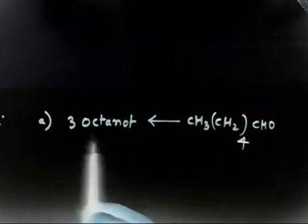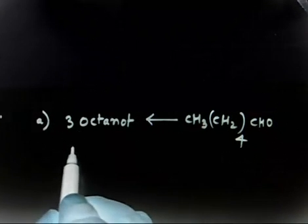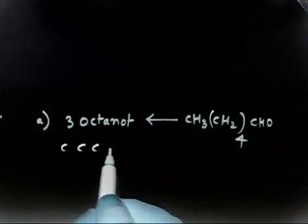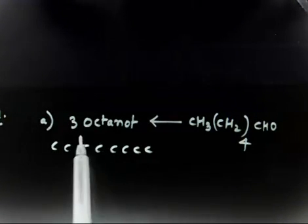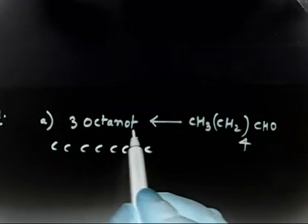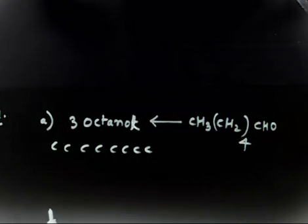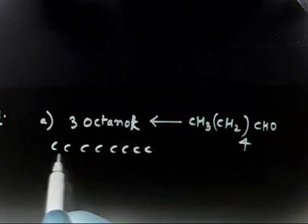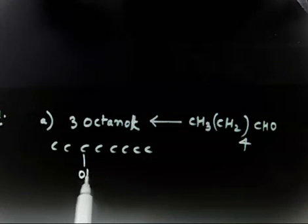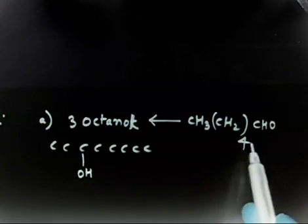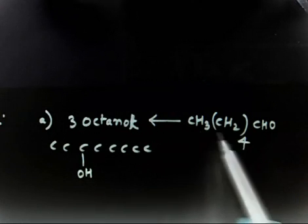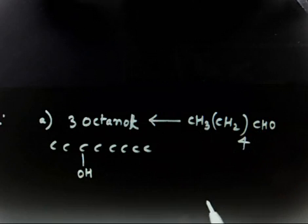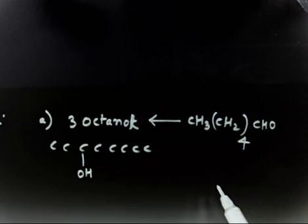Let us draw the structure of 3-octanol. It has 8 carbons: 1, 2, 3, 4, 5, 6, 7, 8, and at position number 3 you have an OH group. The starting material hexanal has 6 carbons, so you need 2 more carbons. This means you have to take a Grignard reagent containing 2 carbons.